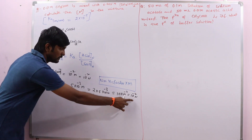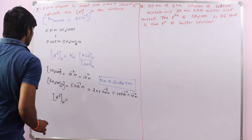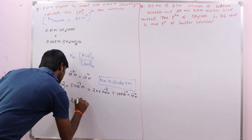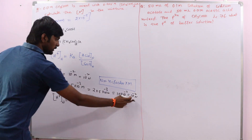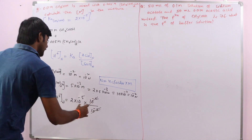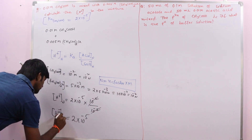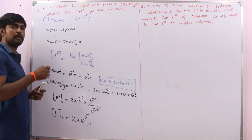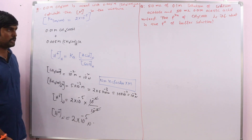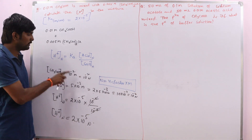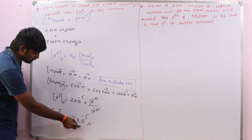Now substituting these values: H⁺ = Ka × (concentration of acid) / (concentration of salt) = 2×10⁻⁵ × (10⁻²) / (10⁻²). Both 10⁻² terms cancel, giving H⁺ = 2×10⁻⁵ normal. First identify which type of solution it is, write the suitable formula, and remember to express concentrations in normalities.